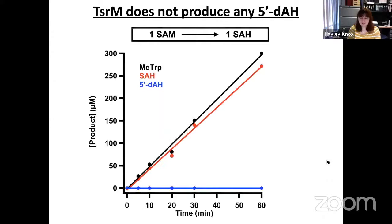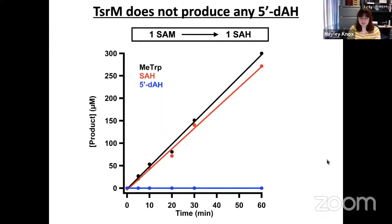However, in our characterization of TSRM, we noticed something different. TSRM does not actually produce any 5'-dAH. Instead, it forms methylated product and SAH in an almost one-to-one ratio, which is drastically different from all other characterized members of this class. So TSRM does not appear to react by the canonical mechanism — we just have one SAM going to one SAH.